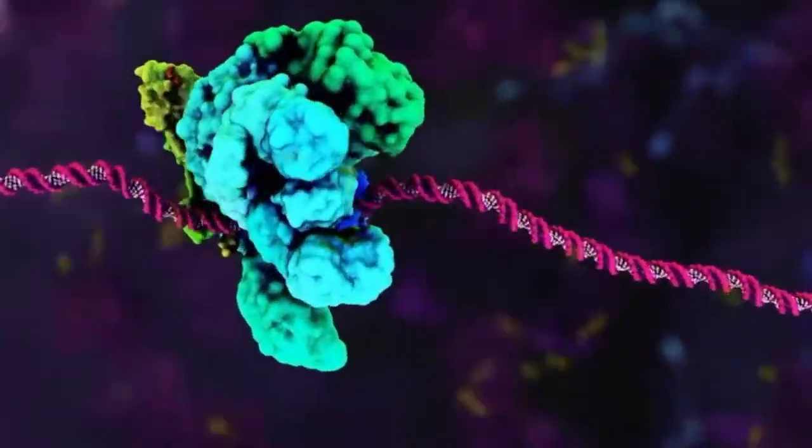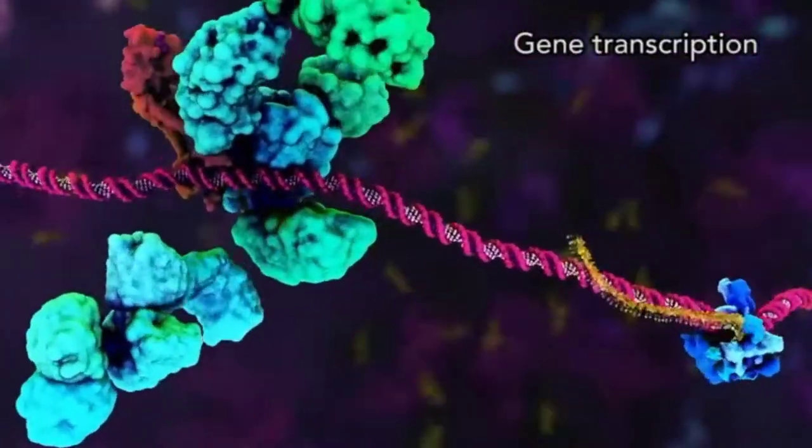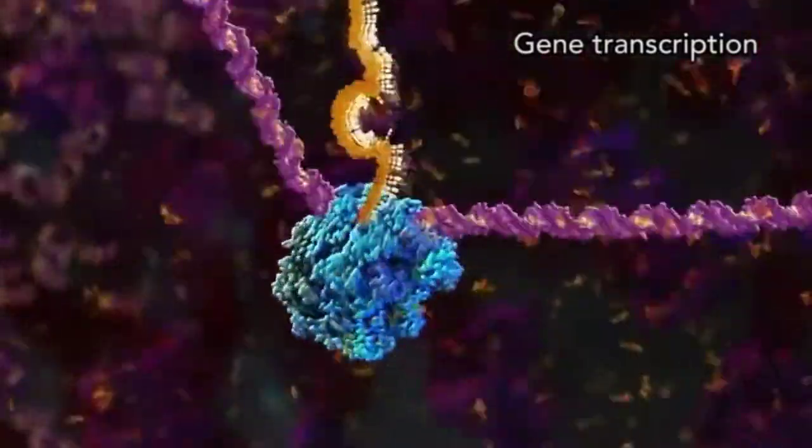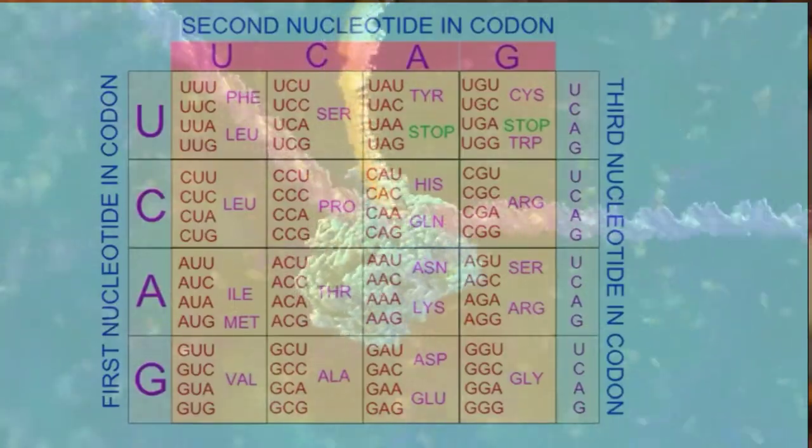but rather their specific arrangement in accord with an independent symbol convention, which was later explicated in the form of what we call the genetic code. So we had genetic text functioning according to a code. So it really was pure information.